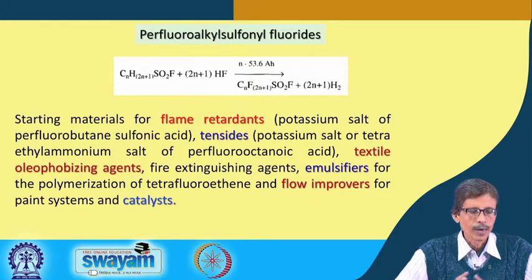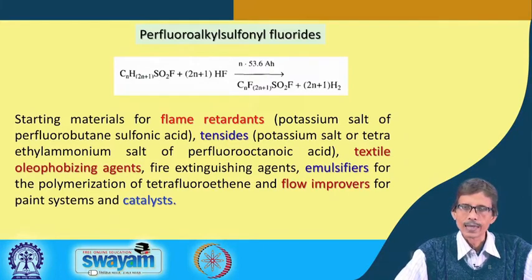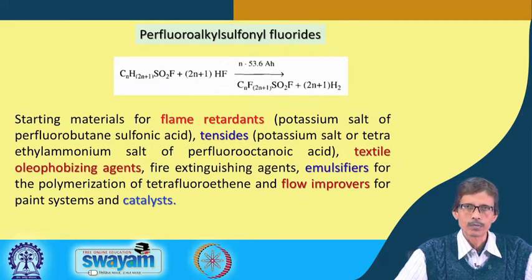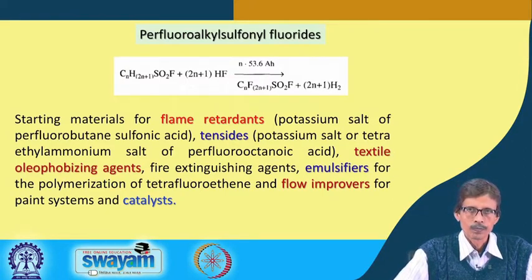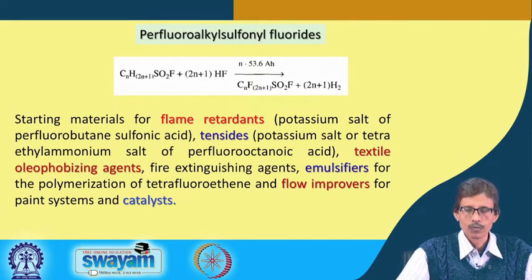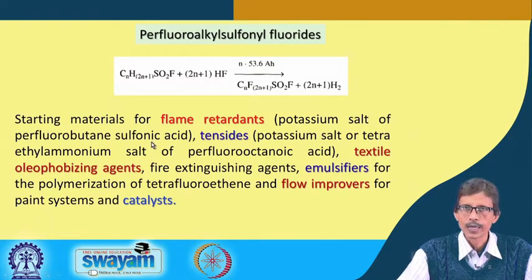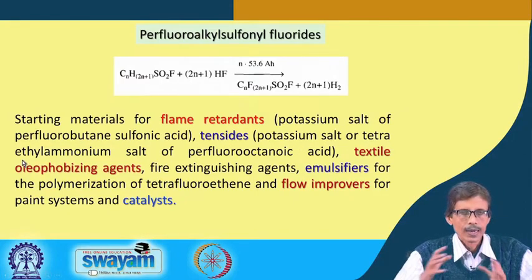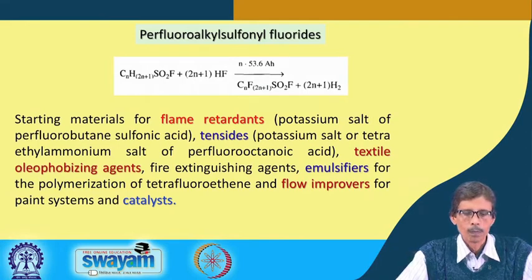This compound has a sulfonic acid function SO₃H, not sulfonyl fluoride. It has a 4-carbon butane backbone where all hydrogen is substituted by fluorine — perfluorobutane sulfonic acid — and the sulfonic acid is converted to its potassium salt. There is also a specialty molecule known industrially as a tenside — the tetraethylammonium salt of perfluorooctanoic acid, which is the octanoic acid with an 8-carbon backbone where all carbons are fully fluorinated.